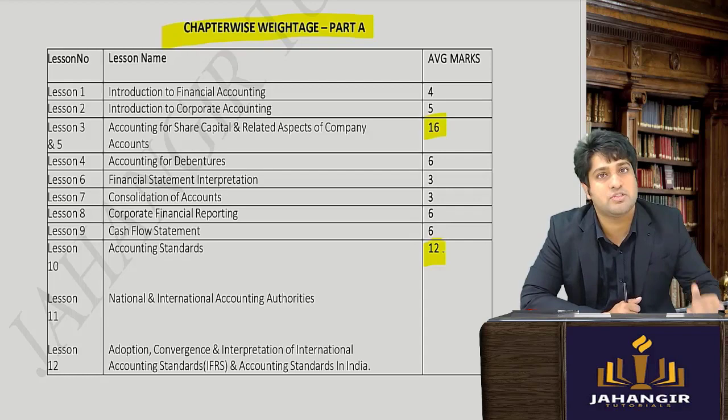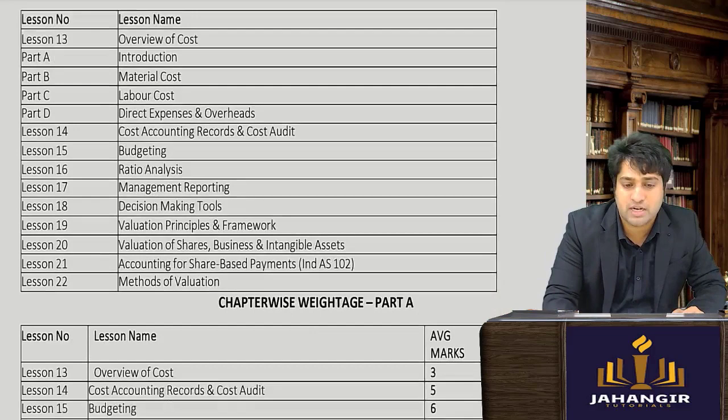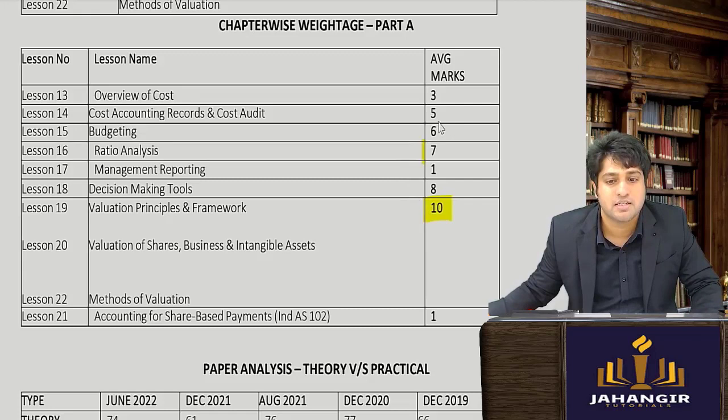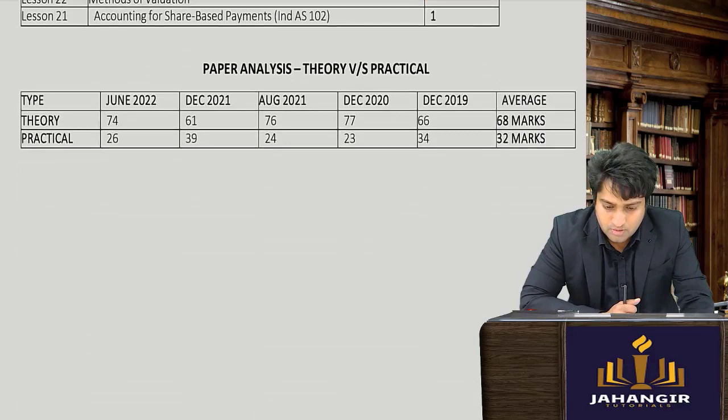For Part B, which covers Management Accounting and Valuation, there are a total of 22 chapters. The highest weightage is for Valuation — methods of valuation and valuation of shares. The next most important chapters are Decision Making Tools, Ratio Analysis, and Budgeting. These are the most important chapters for CMA.